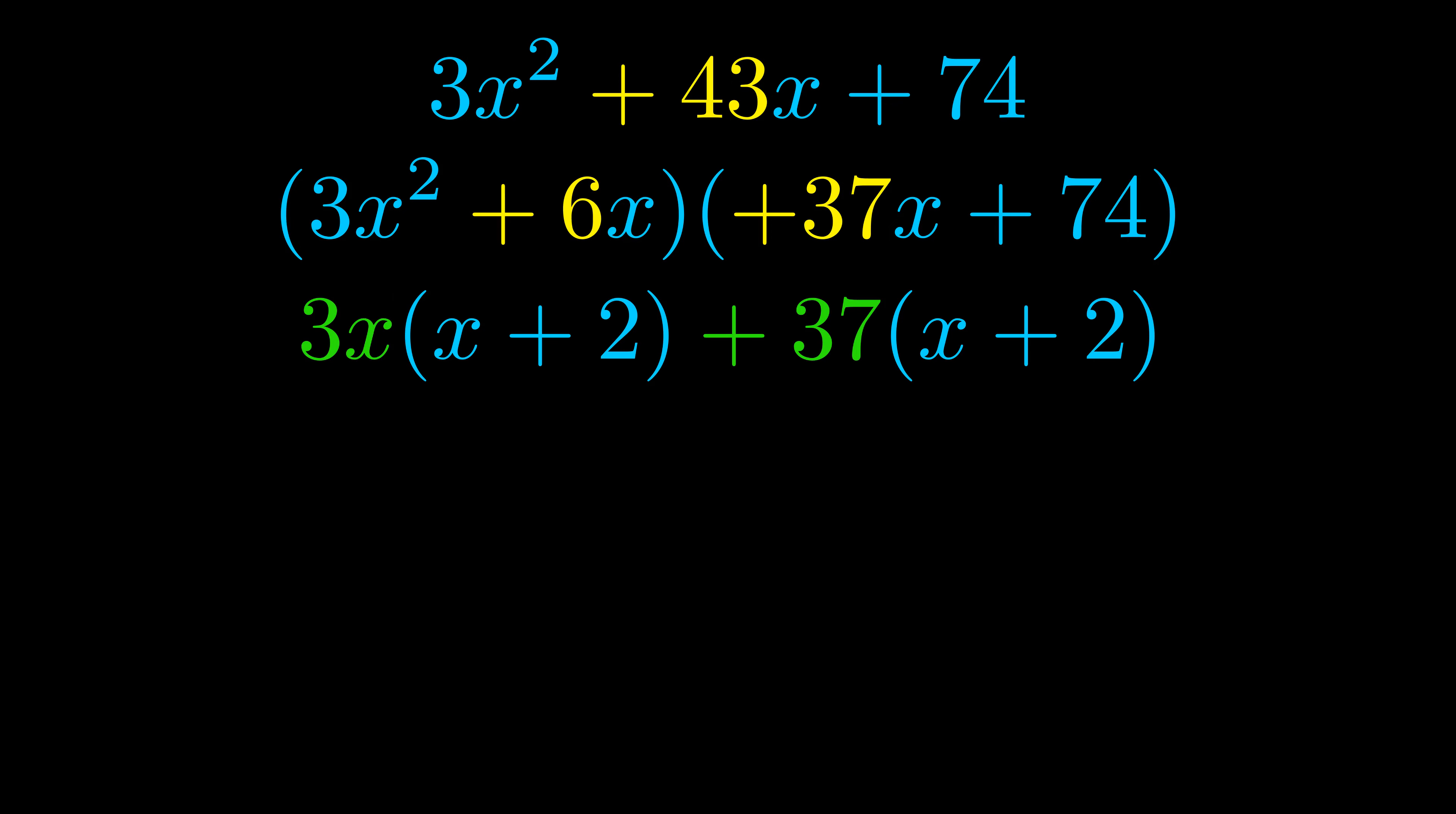Notice also how what remains inside of the parentheses is the same in both cases. The blue values are the same. Those blue values will become one of our factors and we will combine the two green values, the GCFs that we pulled out, to get the other one. And that is our fully factored equation.